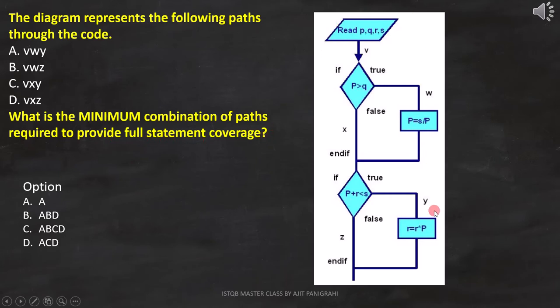Here the flowchart is already given. And in this flowchart, the paths are marked as V, X, Z, W, and Y.